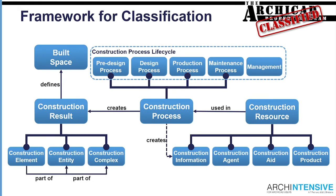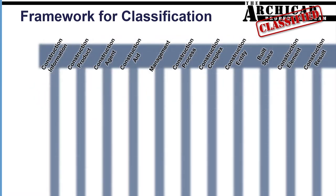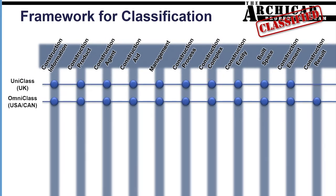If we go back to our classification system, we can take all the classifications and start to look at them in terms of a whole heap of different types and ways of classifying information. We then take those and look at what classification systems are available in the marketplace. We can start with the two big ones: UniClass and OmniClass — the UK versus America. The UK has sections that meet most of these different classification requirements. The OmniClass one seems to go just a little bit further with construction result.